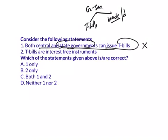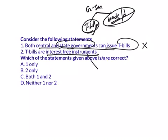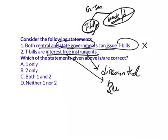A central government can issue both Treasury bills and bonds or dated securities, whereas a state government cannot issue Treasury bills — they can only issue bonds or dated securities to raise money. The next statement is: 'Treasury bills are interest-free instruments.' Yes, Treasury bills are issued at a discounted rate against face value, so they are zero-interest instruments. Since the first statement is wrong and only the second is correct, the answer is B — only two.